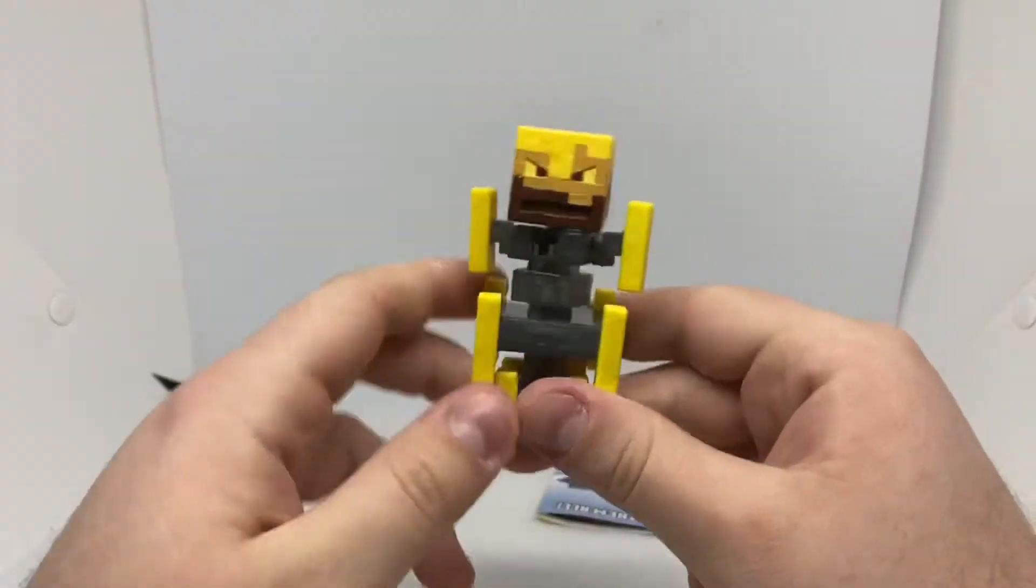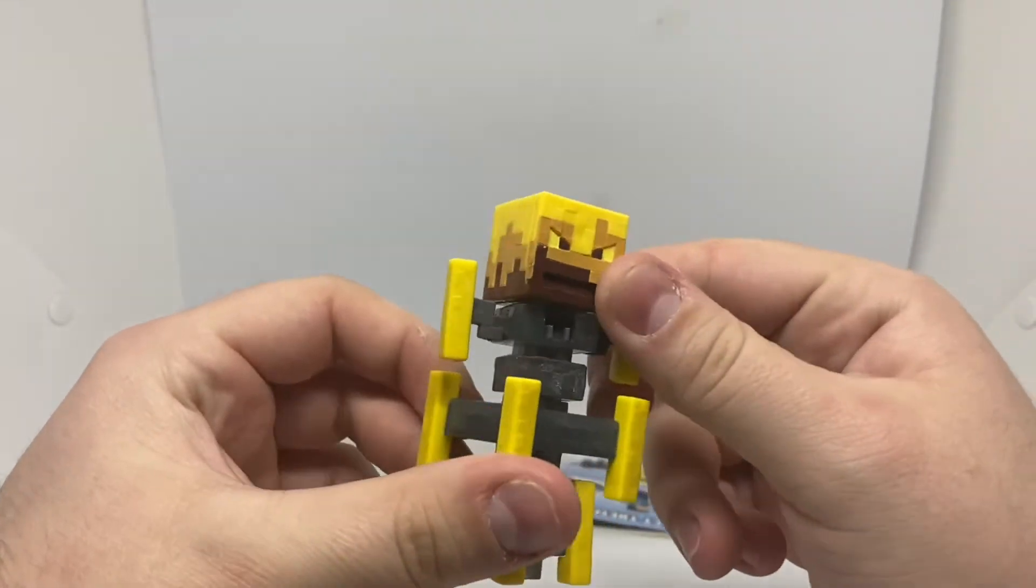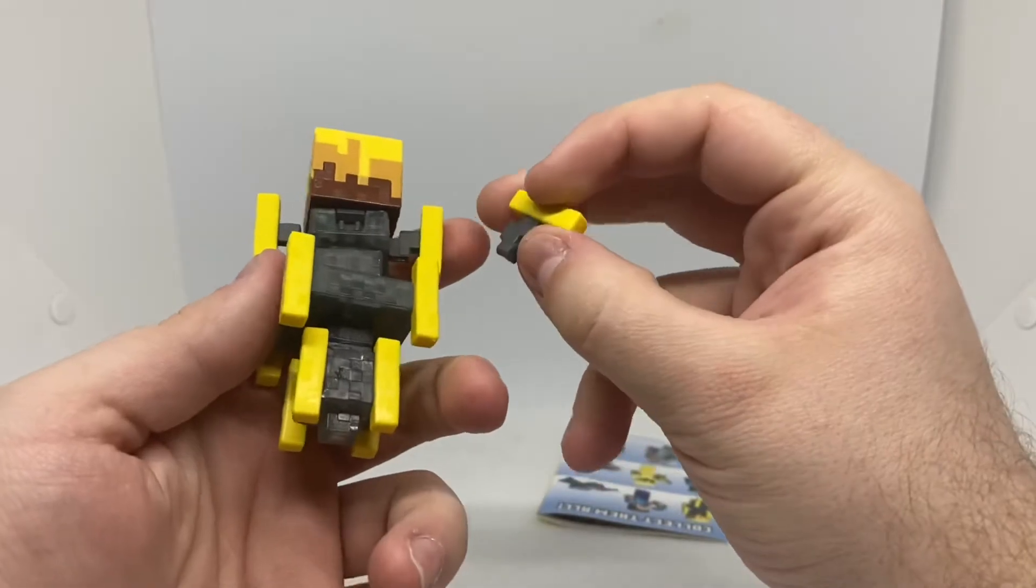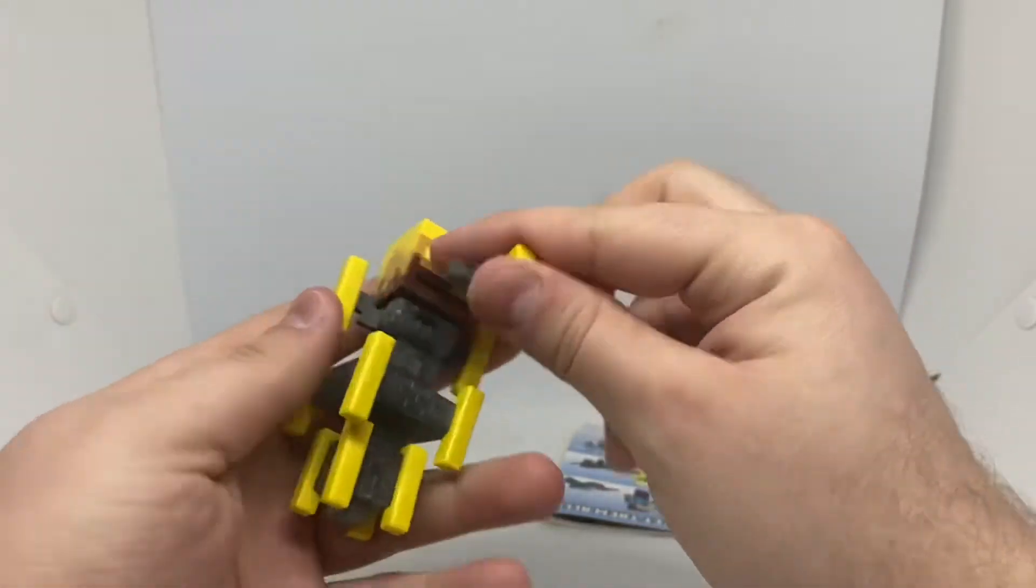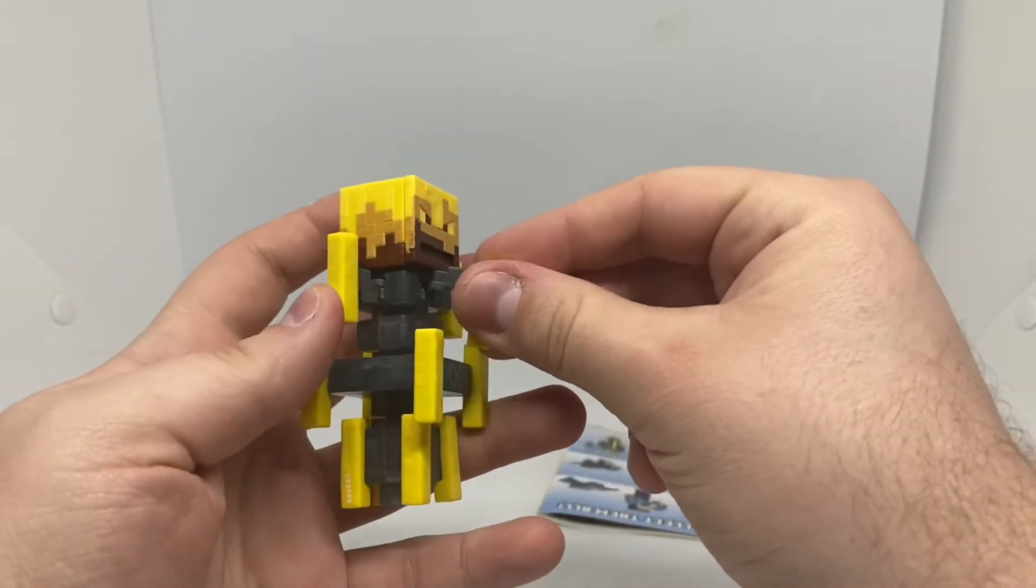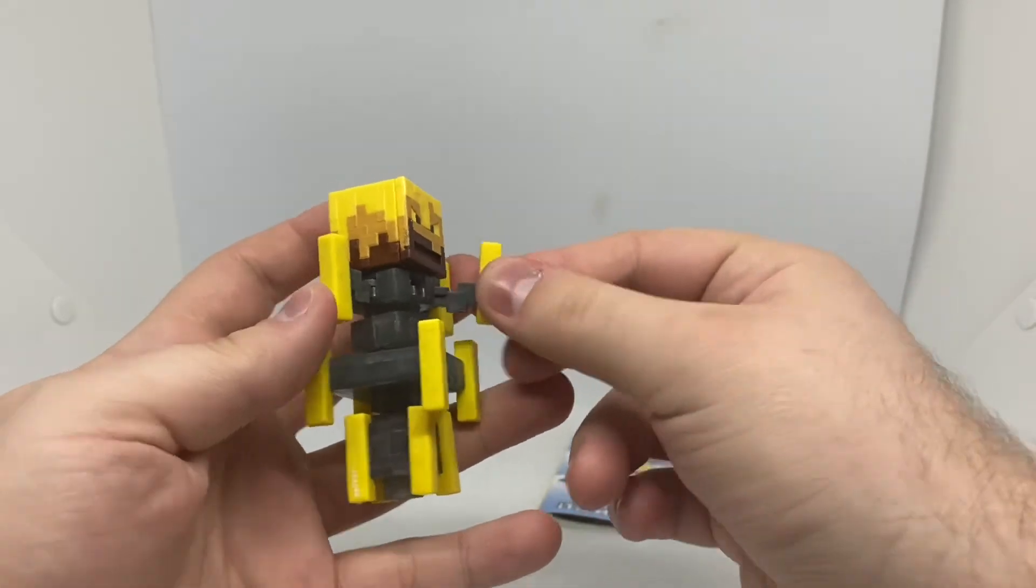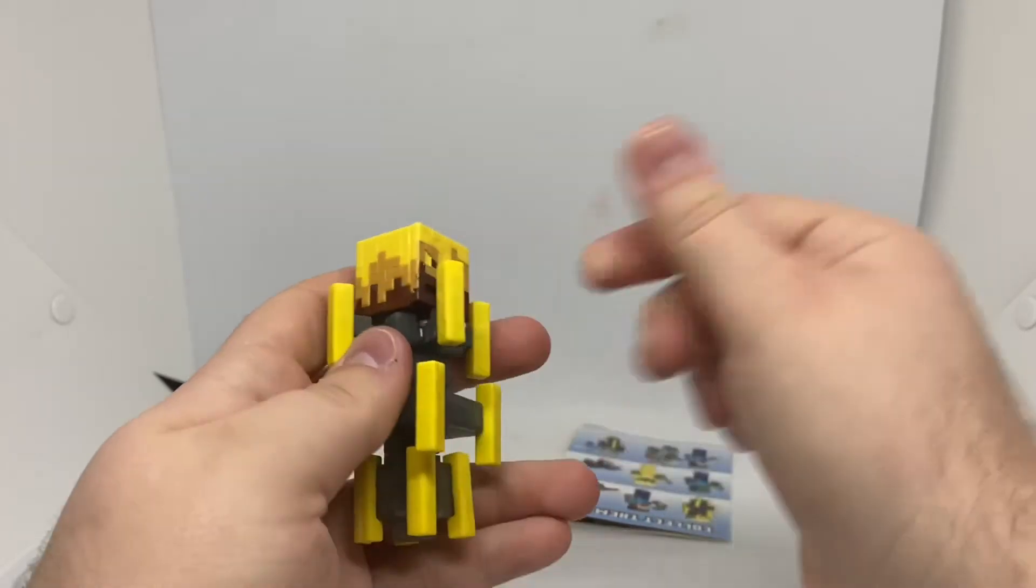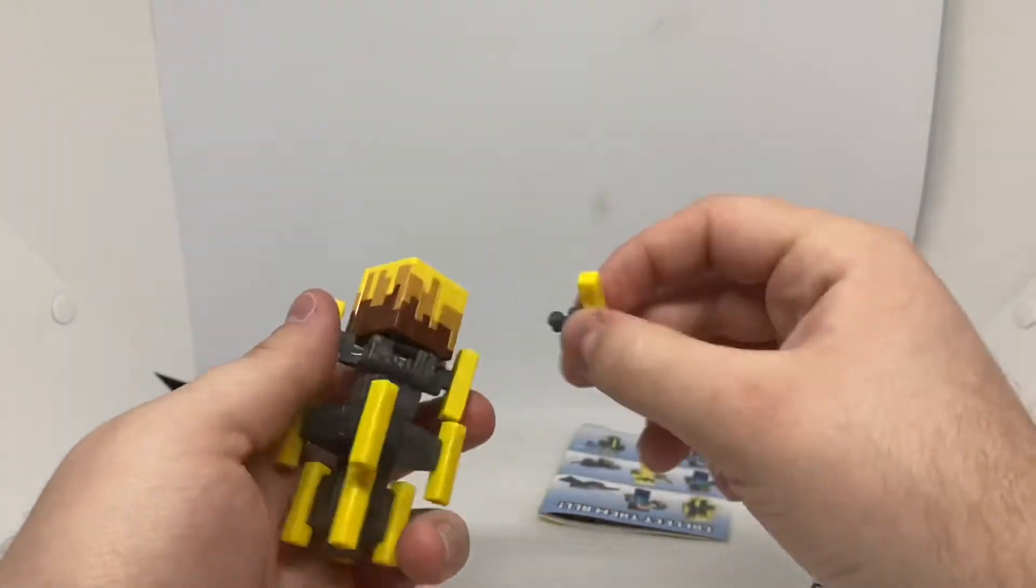So here is the Blaze rod out of his packaging. Pretty cool looking. You do have to connect these other pieces. I believe there's one in the front, so I believe they go like that. Yep, obviously have to take them off so the figure can fit in the packaging.